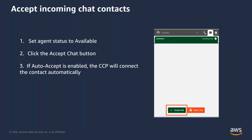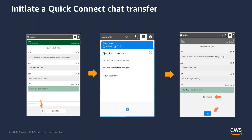Moving on to chat interactions. Accepting incoming chats is almost similar to accepting incoming calls, with the only exception that you will be interacting with customers using the chat tab of the CCP. You set yourself to available and accept the incoming chat by clicking on the accept chat button and start talking with your customers. Again, if auto accept is enabled, the CCP will connect the contact automatically. For quick connects with chat, you simply click on the quick connect tab, choose your quick connect of choice, and complete the transfer by clicking on the transfer icon below.